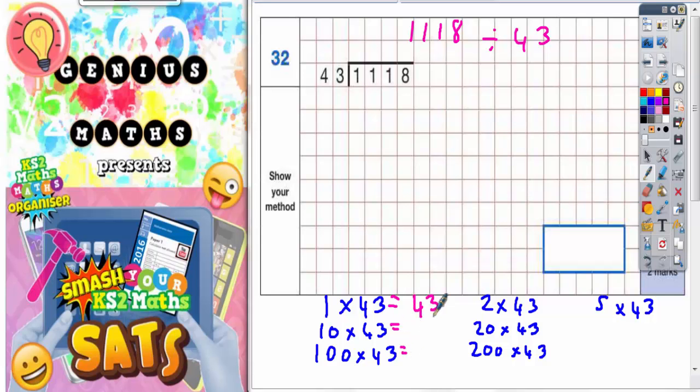So 1×43 is 43. 10 43's is going to be the same as 1×43 but with 1 zero on the end, so 430. 100 43's is to say there's 1×43 but with 2 zeros on the end, so 4300.